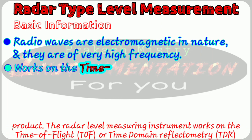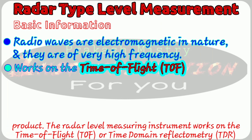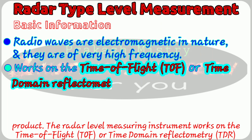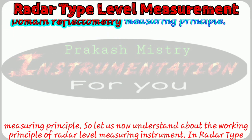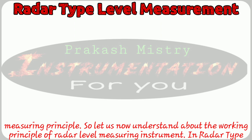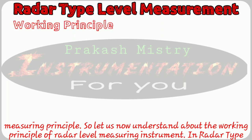That means radar level sensors use electromagnetic waves whose frequency is in gigahertz to measure the level of the product. The radar level measuring instrument works on the time of flight, or time domain reflectometry, measuring principle. Let us now understand the working principle of radar level measuring instruments.